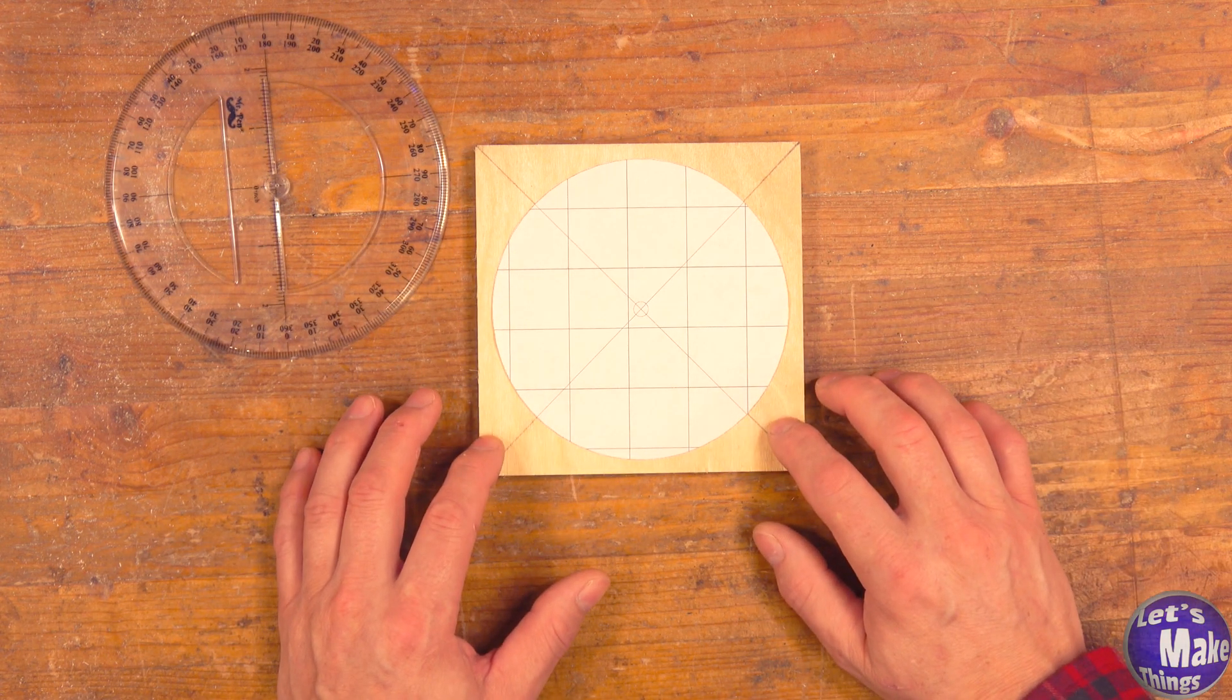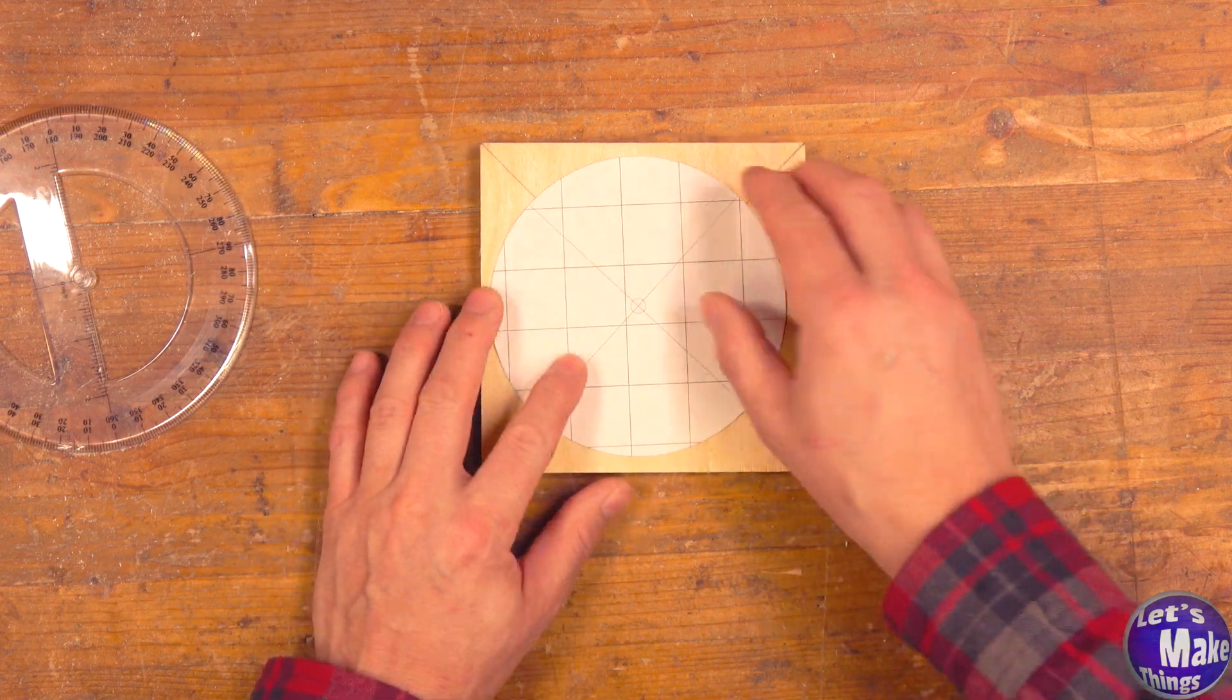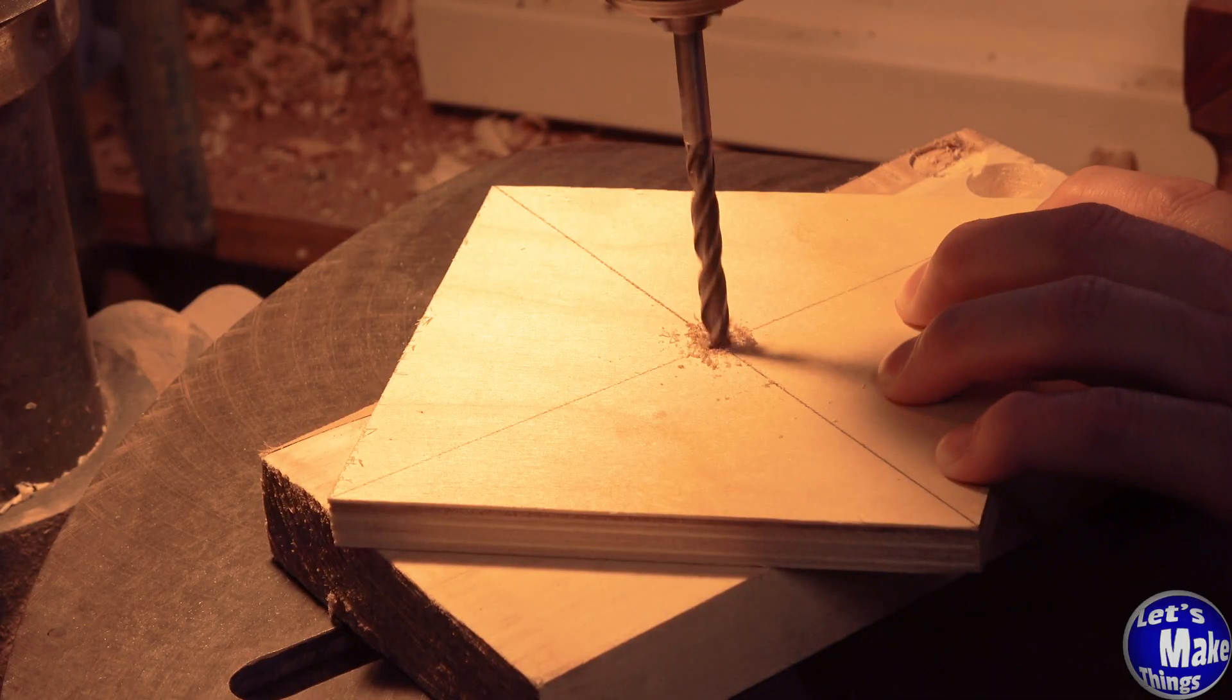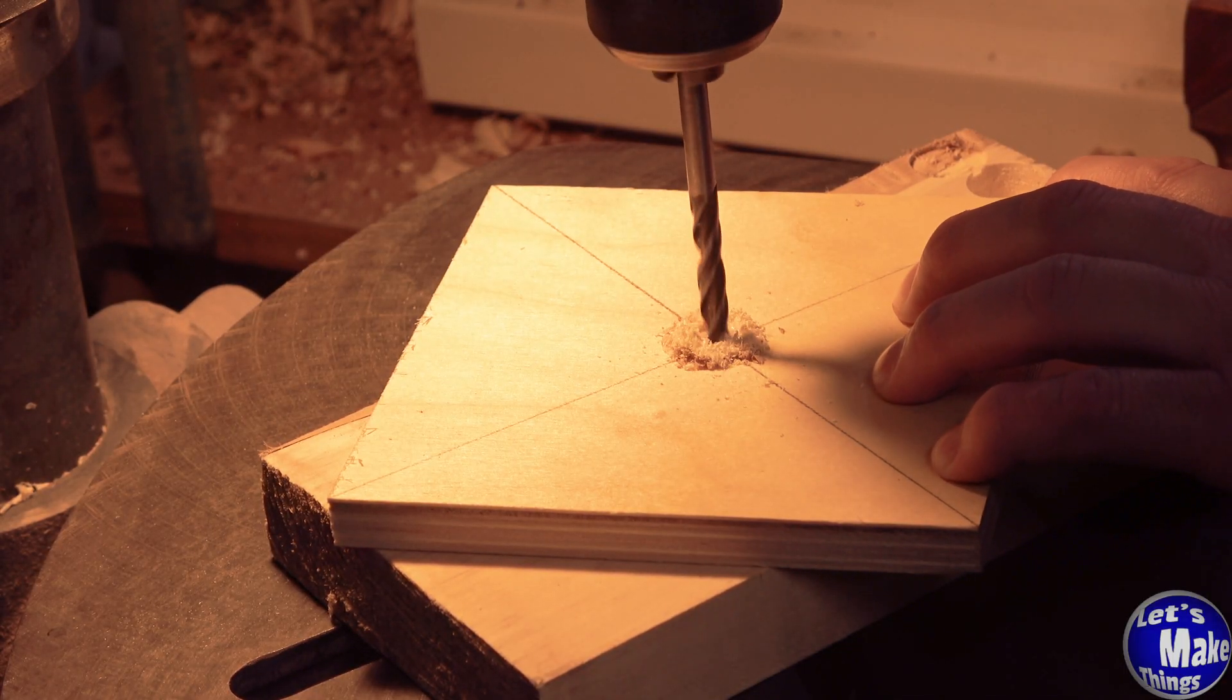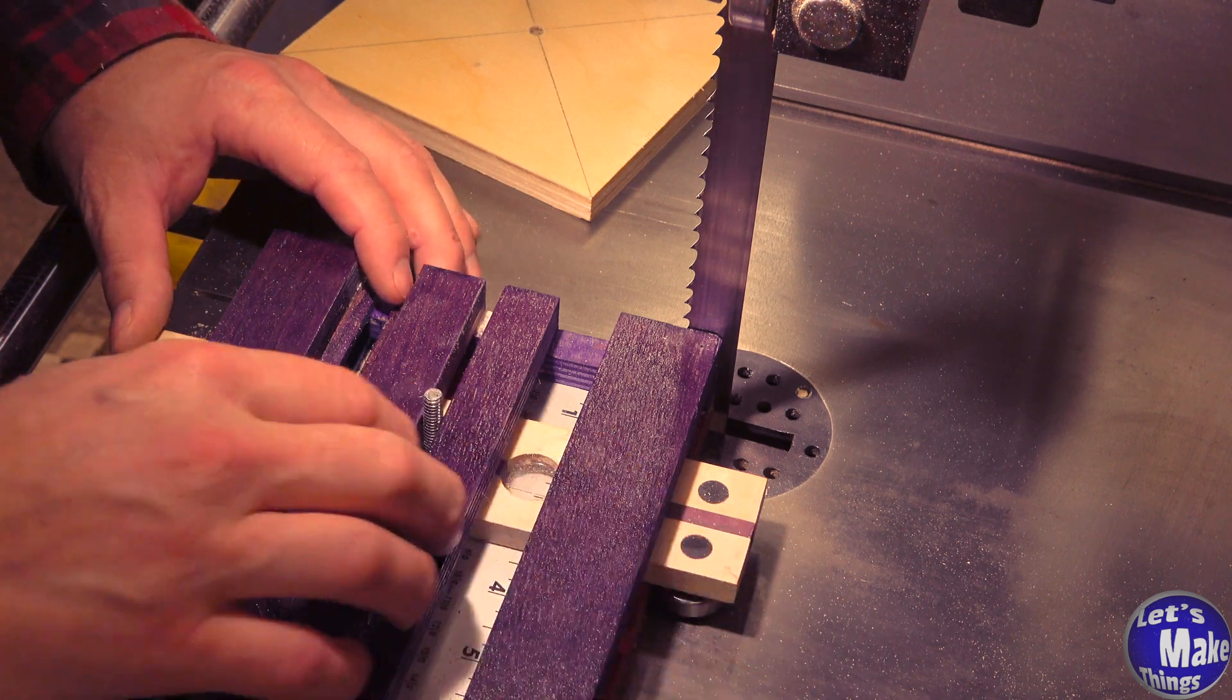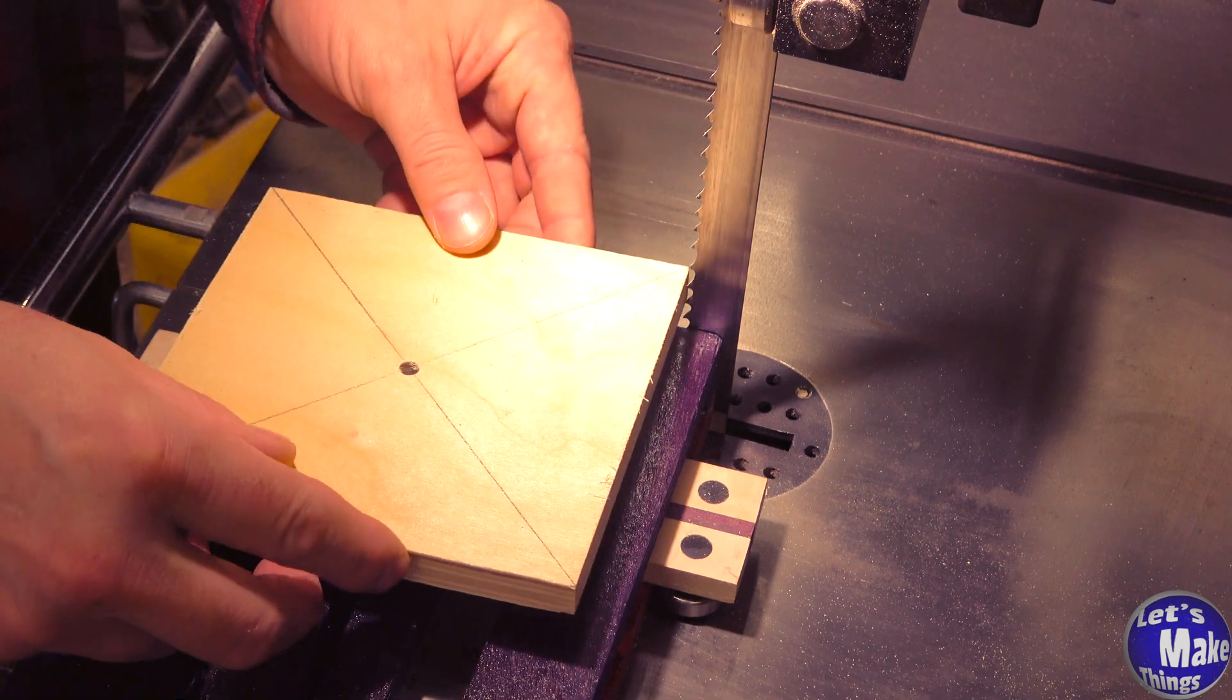When it's dry, take it over to the bandsaw and cut around that circle as clean as you can. Since I'm going to use my circle cutting jig, we'll go ahead and do that now. At the drill press, I'm going to hit the center with a quarter inch drill bit. I set my sliding miter arm at 2 and 3/8 inches, which is the radius of the circle that I want to cut. And now I'll go ahead and cut this out.